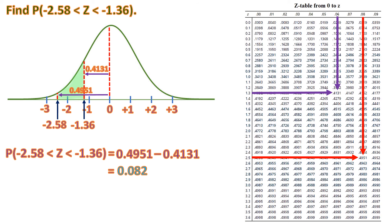You might ask: why did we add in the previous example but subtract here, even though both were 'in between' problems? Here's the hint: if 0 is between the two z-values (i.e., within the shaded region), you add the two areas. If 0 is not within the shaded region, you subtract.